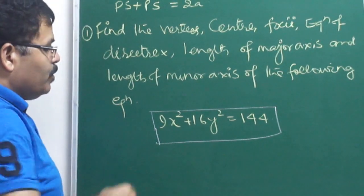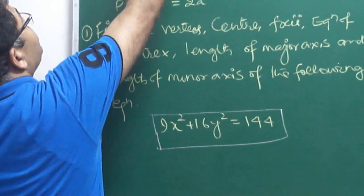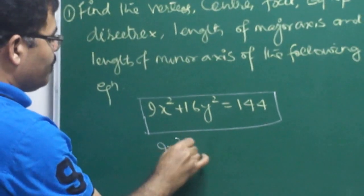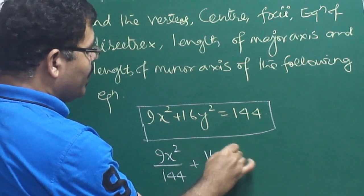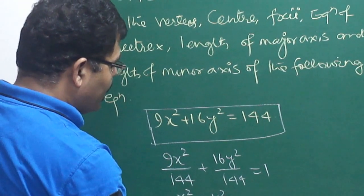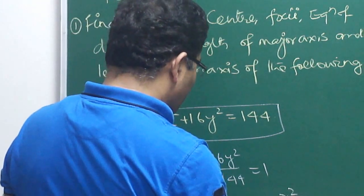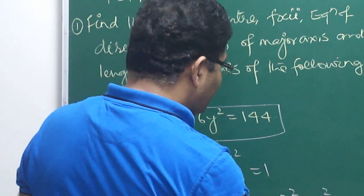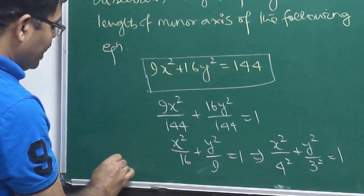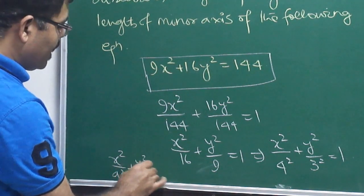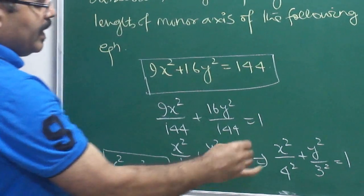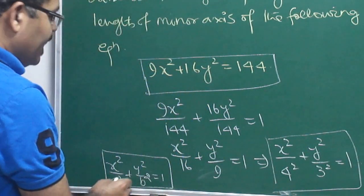We divide the ellipse equation by 144. Why? Because in the standard form of the ellipse, the right-hand side must equal 1. We know that comparing this with the general equation of ellipse, what value comes in place of A?